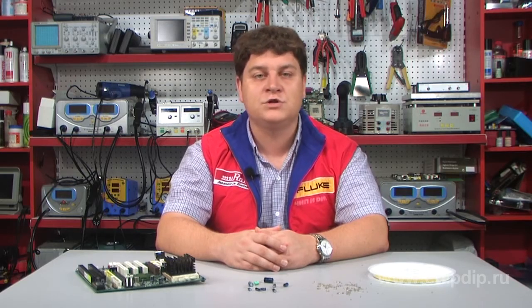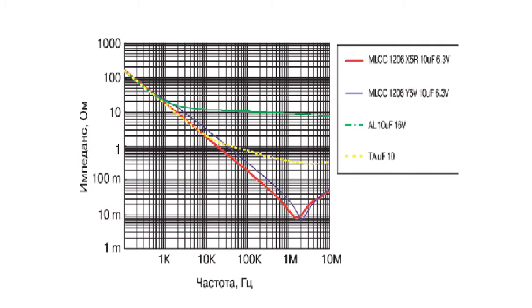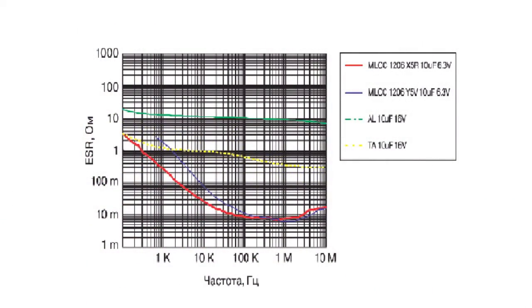Frequency characteristics of capacitors depend on the relations of their impedance and equivalent series resistance to their frequency. The impedances of ceramic capacitors with frequencies above 1 kHz, impedances of aluminium electrolytic capacitors, and impedances of tantalum capacitors with frequencies above 10 GHz differ significantly.